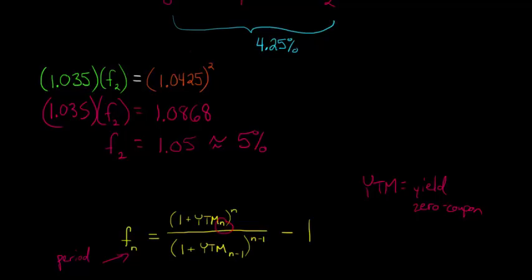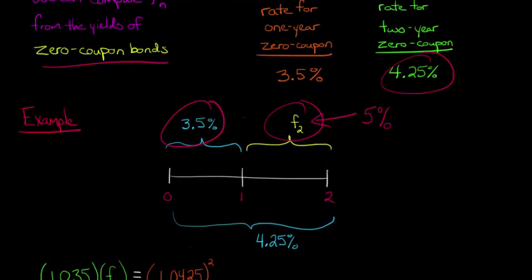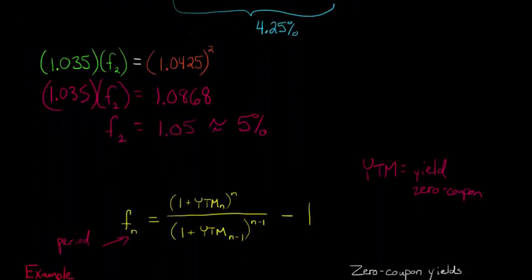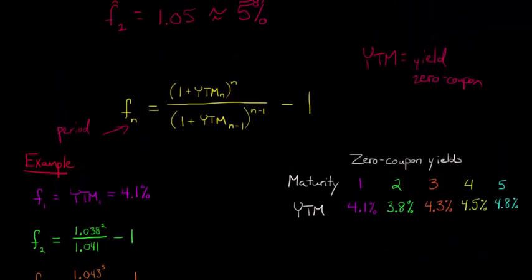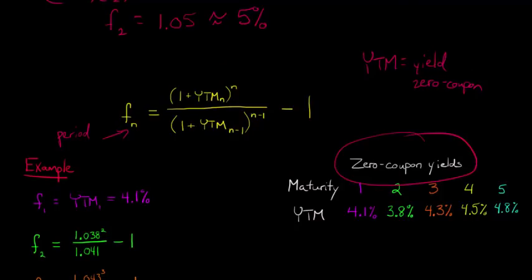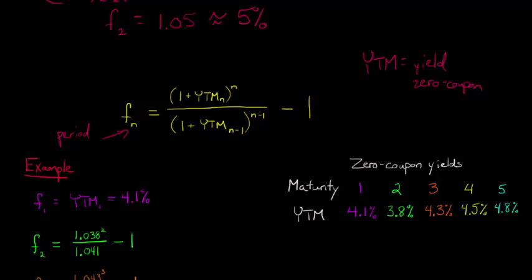Since this is a bit abstract, let's jump into an example. Let's say we have a set of zero coupon yields: a one-year zero coupon, a two-year, three-year, four-year, and five-year zero coupon bond, each with their respective yields to maturity. Now we can use those yields to calculate the forward rates. The forward rate for year one is easy — that's just the yield to maturity on the one-year zero coupon, so that's just 4.1%.